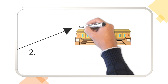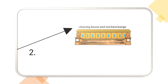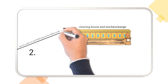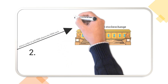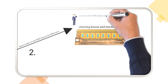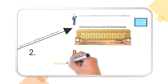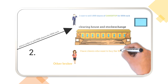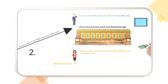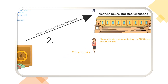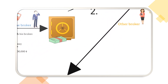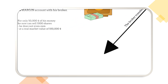He will order the broker to sell the one thousand shares, and the broker will place the order accordingly. Here we have our shares — now we have to wait for another broker. Here she comes, and she wants to buy one thousand shares for a hundred dollars each, making a total of one hundred thousand dollars, which goes to the broker.